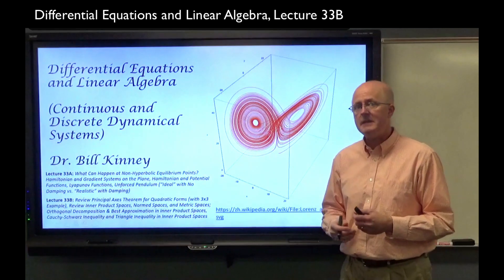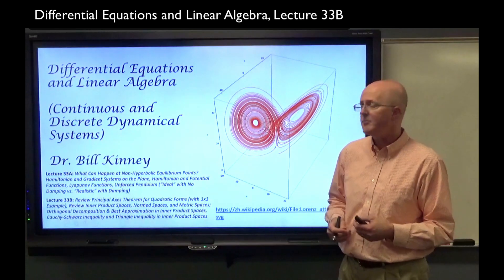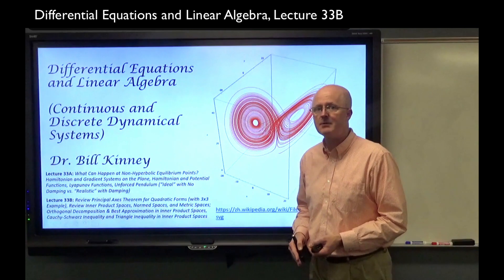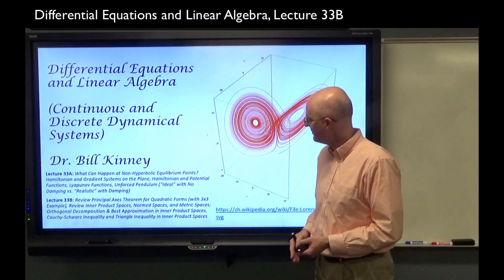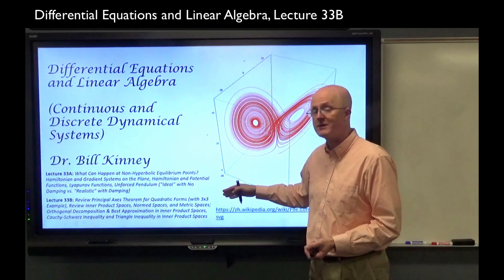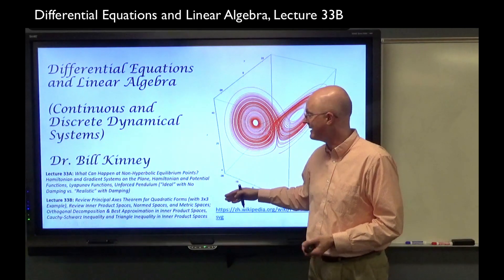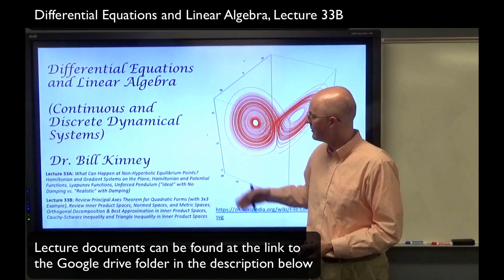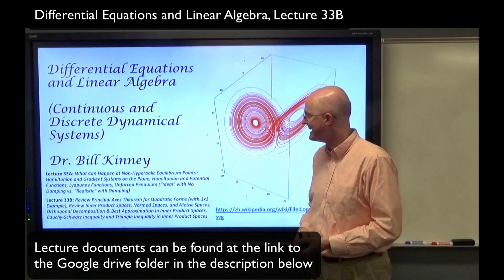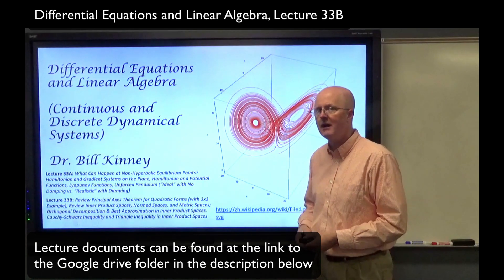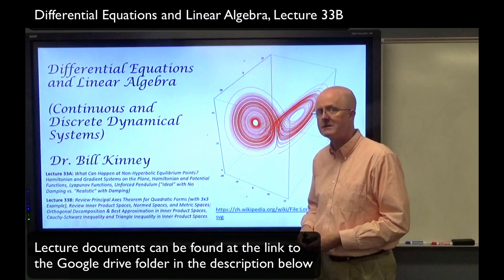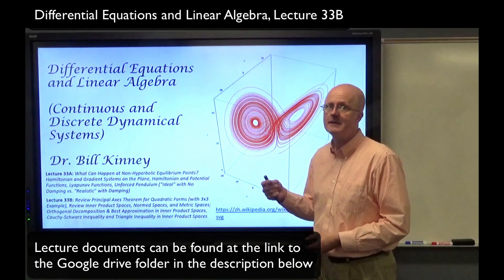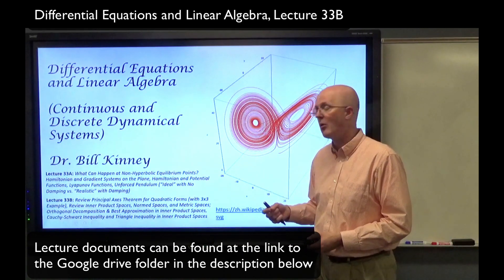In lecture 33b, we're going to start off pretty concrete with a three-dimensional example of a quadratic form whose symmetric matrix representative is a three-by-three matrix. In the context of that example, we will review the principal axes theorem and the characterization of quadratic forms in terms of their eigenvalues and whether they are positive definite, negative definite, or indefinite.